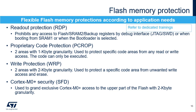Several flash memory options can be configured using the option bytes. The readout protection is configured using the RDP option byte; it prohibits any access to the flash memory, the SRAM2, and the backup registers by the debug interface, or when booting from SRAM1, or when the bootloader is selected. The proprietary code protection is configured using the PC-ROP option bytes; these options protect specific code areas from any read or write access — the code can only be executed. The protected areas can be defined with 2-kilobyte granularity, and two areas can be defined.